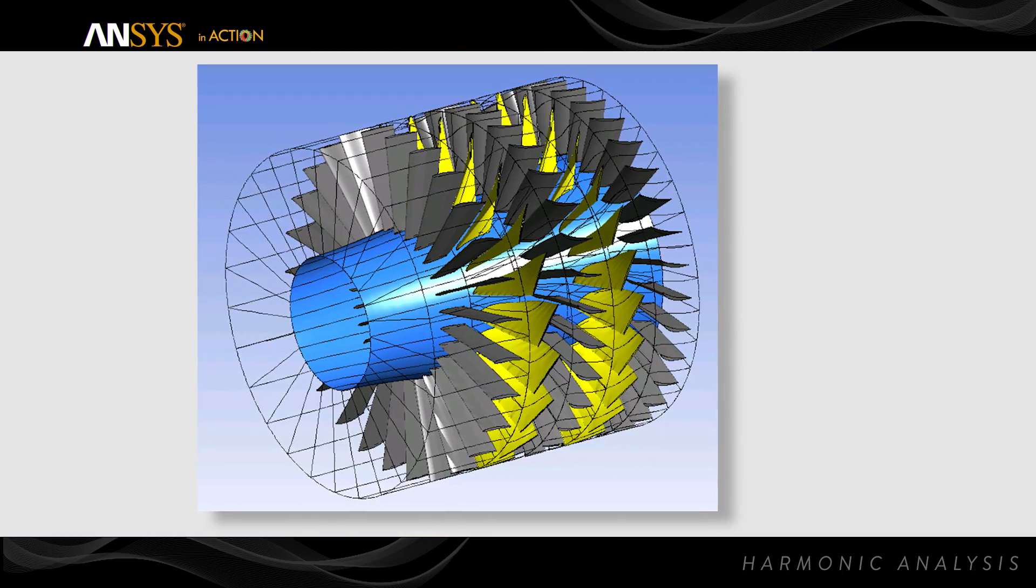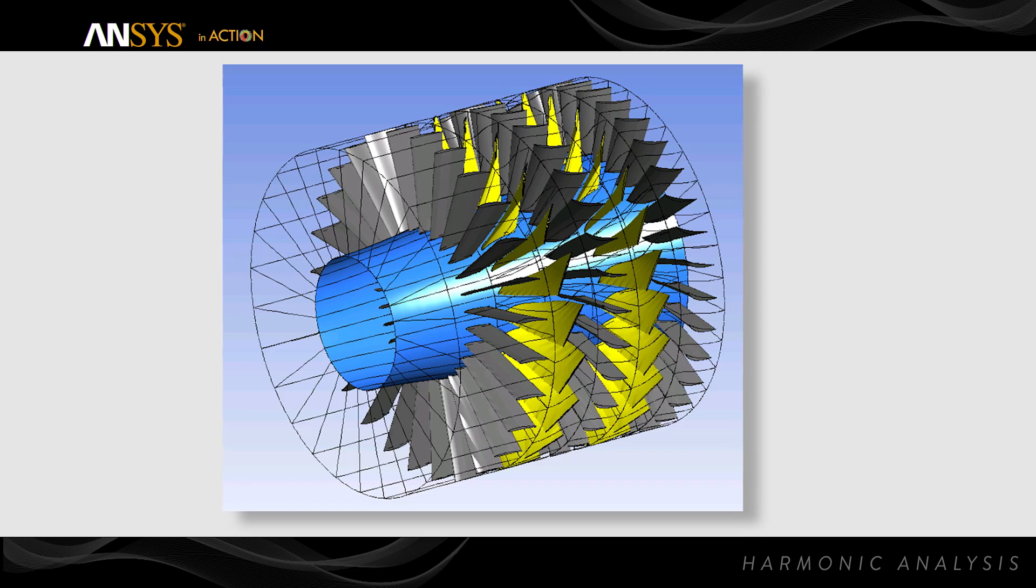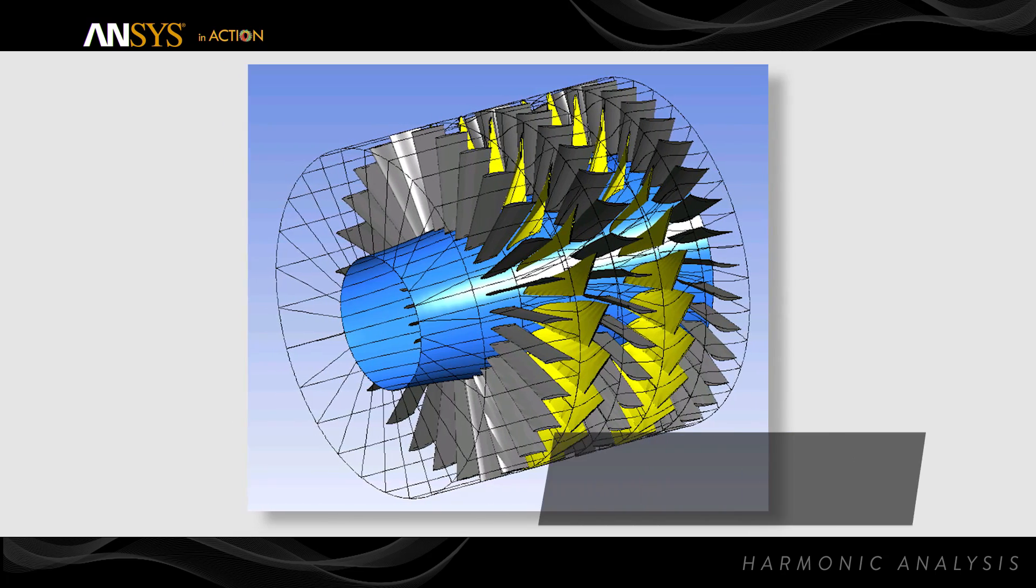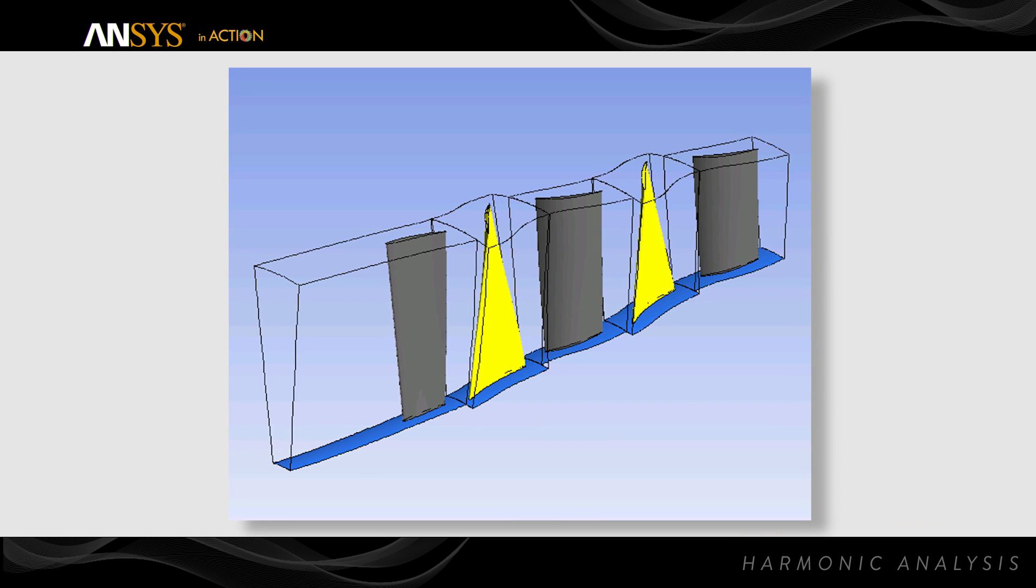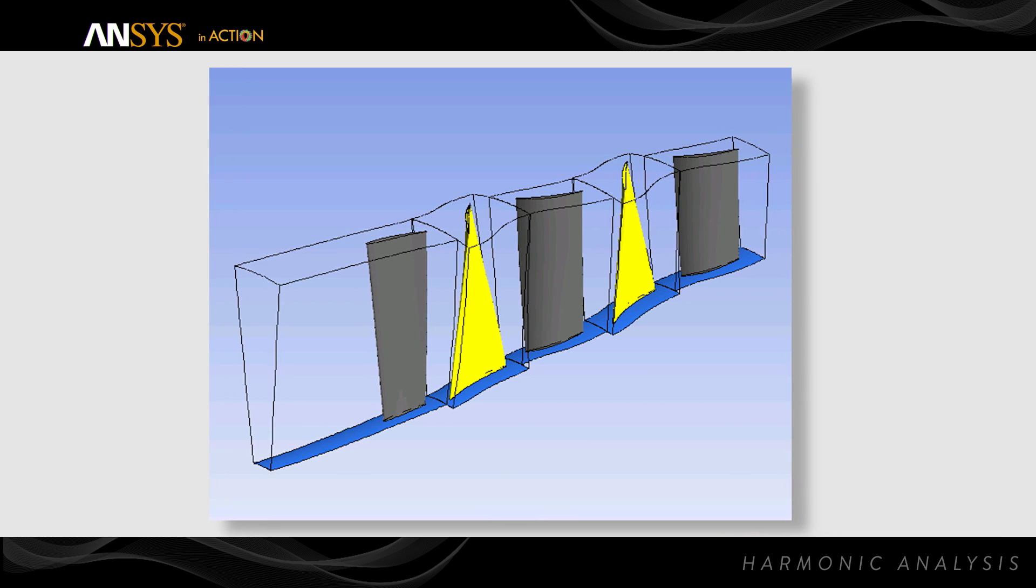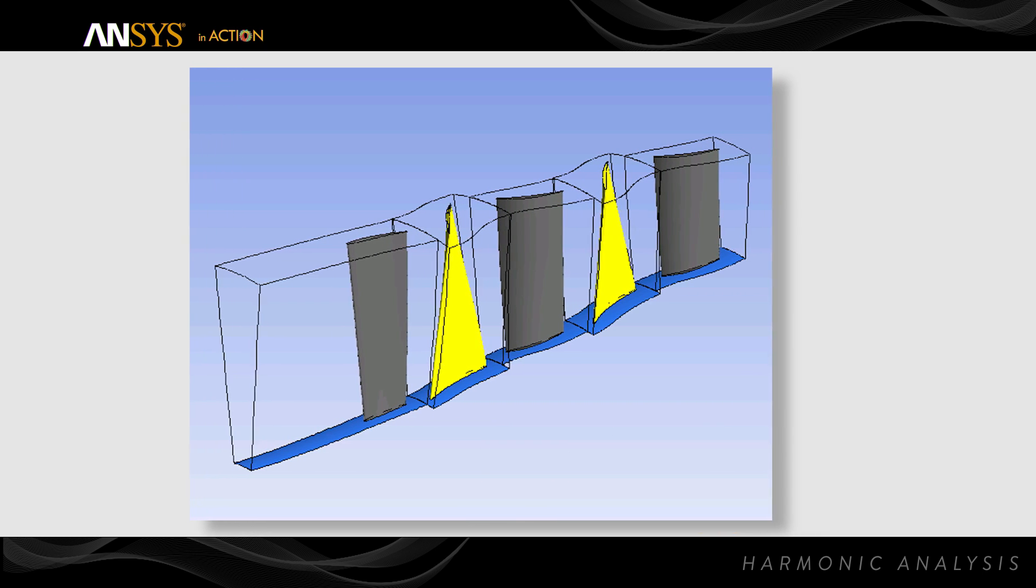Transient blade row with pitch change models offer solutions 10 times faster than full wheel transient simulation by solving the turbomachinery flow problem on reduced geometry of one or few blades per row without sacrificing solution fidelity and accuracy.